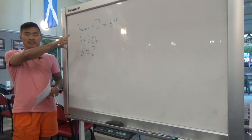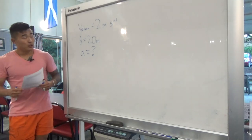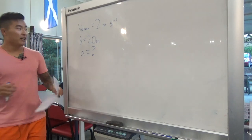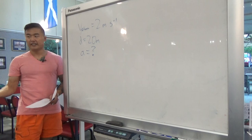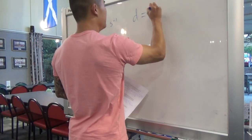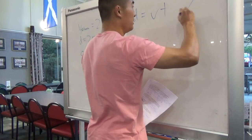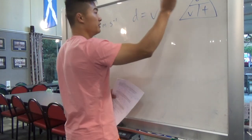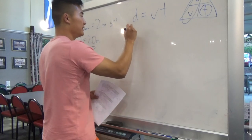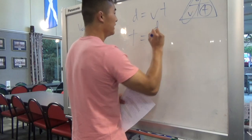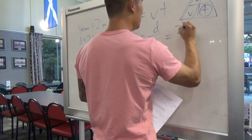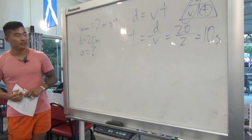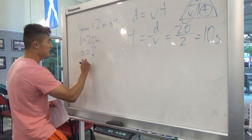There isn't quite enough information yet, but using the constant velocity and distance, we can figure out the time it'll take the phone to reach the cliff edge. Distance equals velocity times time, so t equals distance over velocity: 20 meters divided by 2 meters per second gives us 10 seconds for the phone to reach the cliff edge.